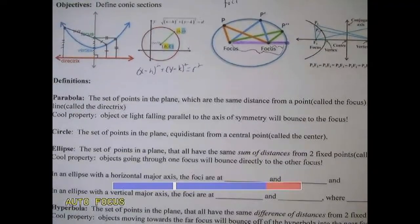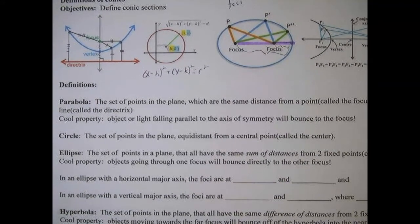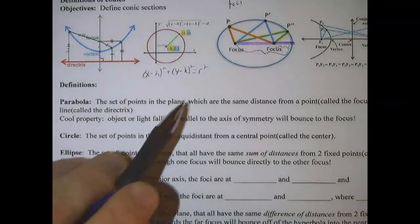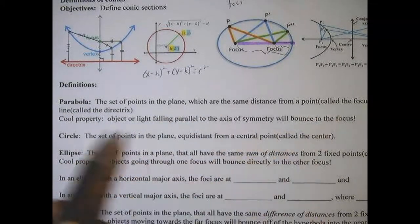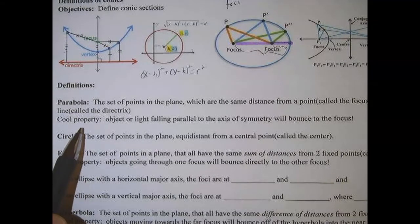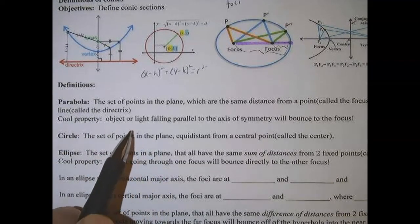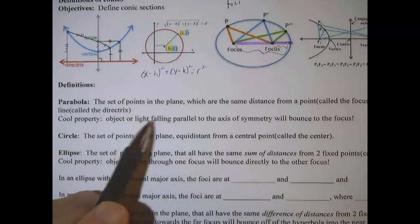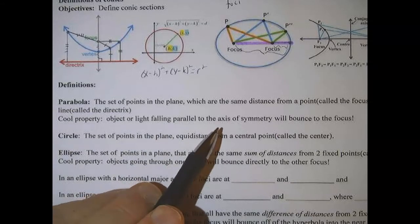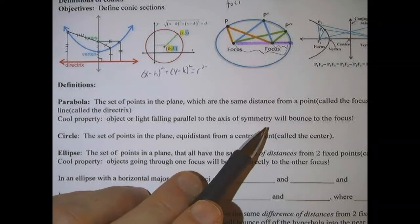So each of these figures have some pretty cool properties. I just wrote down the definitions here, the set of points in a plane, which are the same distance from a point, called the focus, to a line. Cool property, objects or light falling parallel to the axis of symmetry, will bounce into the focus.